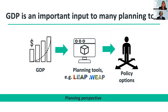All of this showed in a real decline in GDP real growth, as you can see in the graph. GDP is an important input to many planning tools, so from a planning perspective it is really important to account for this decline. Planning tools that use GDP as a major driver of future projections include LEAP and WEEP, and having accurate GDP projections is important to inform the policy options available as we consider different sustainable planning trajectories.